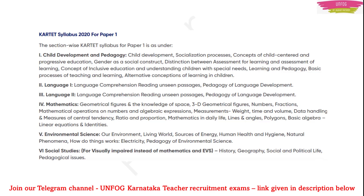These are the six parts of this paper. But basically you have five parts up to Environmental Science. Only for visually impaired people, in place of Mathematics and Environmental Science, they will write Social Studies — they will have four parts, and instead of Mathematics and Environmental Science, they will have Social Studies only.